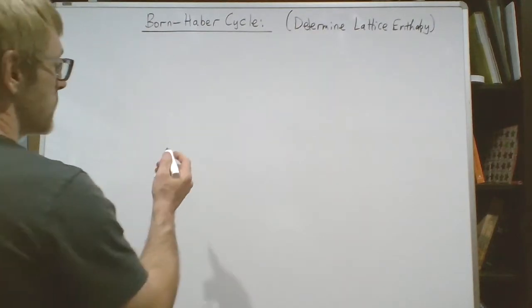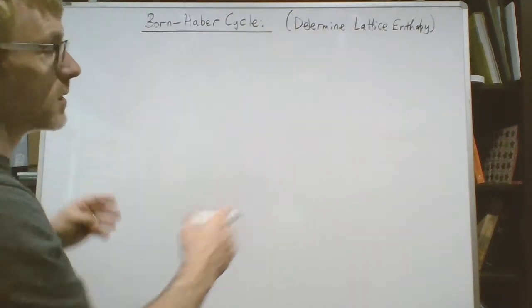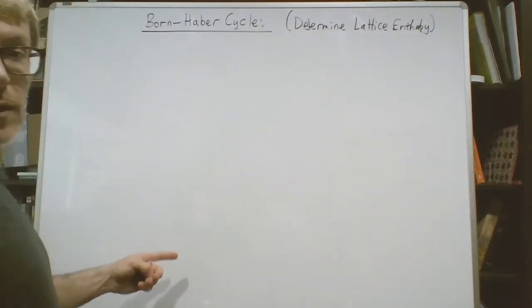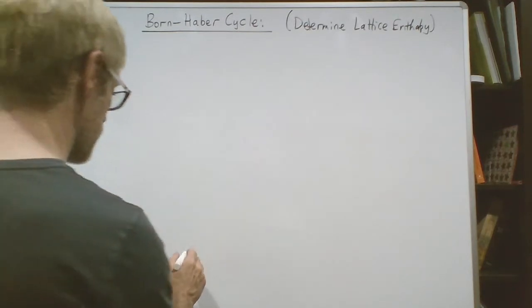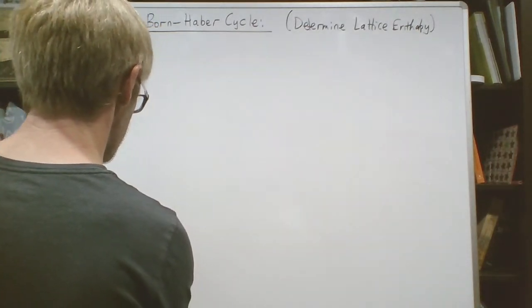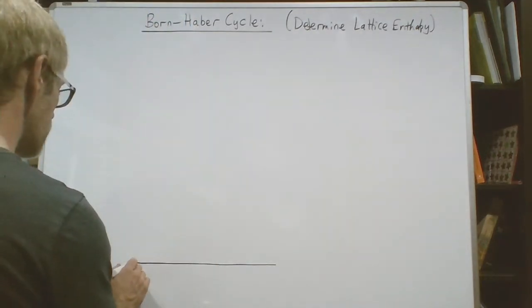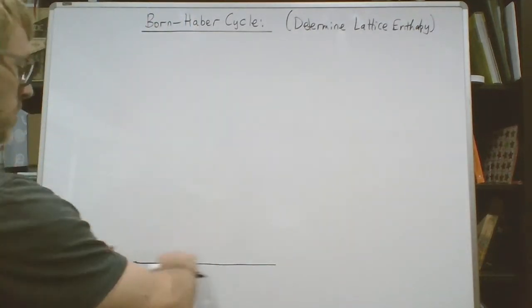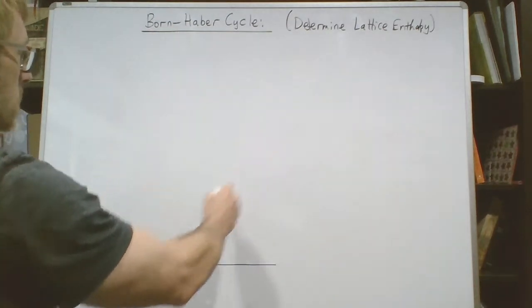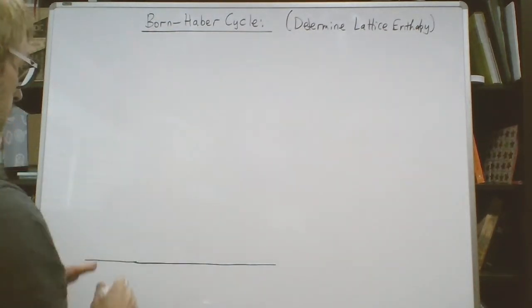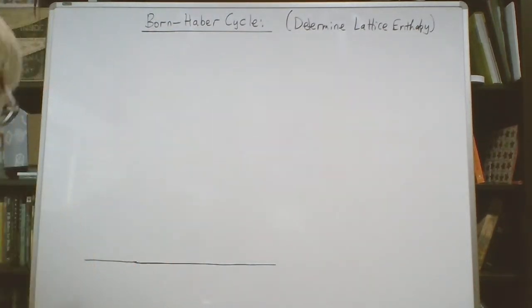So let's have a look at it. So it's a cycle so we're going to, let's see, I'll set up the cycle over here. So I would essentially do a clockwise circle and right at the bottom I'm going to write the ionic compound I'm going to calculate the lattice enthalpy of.